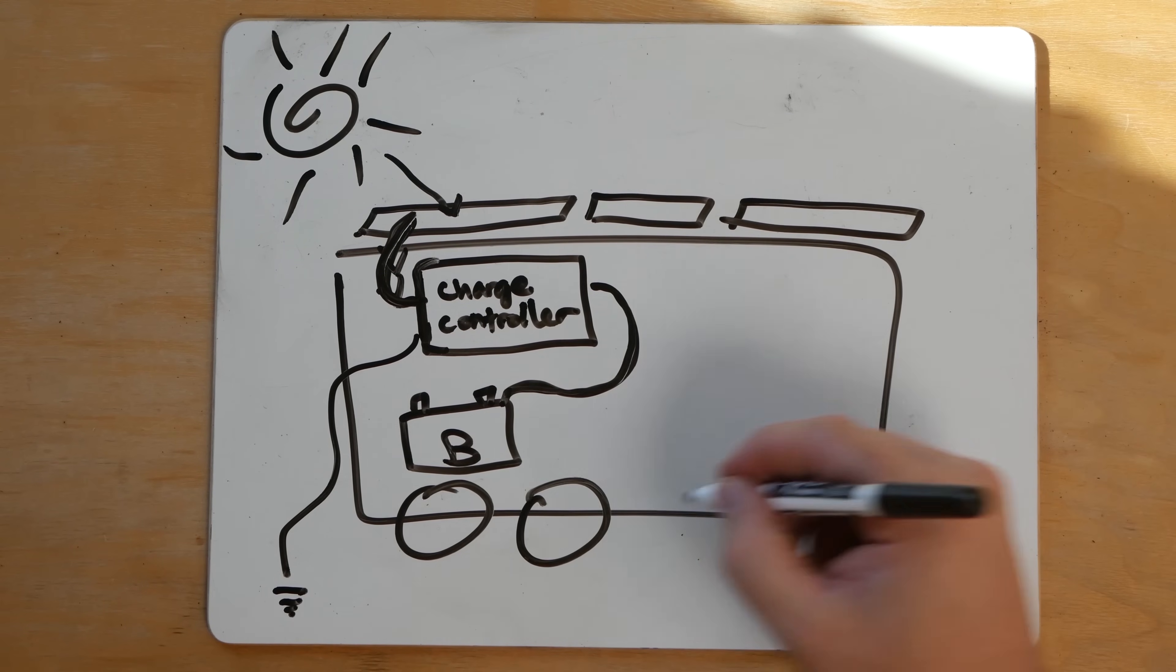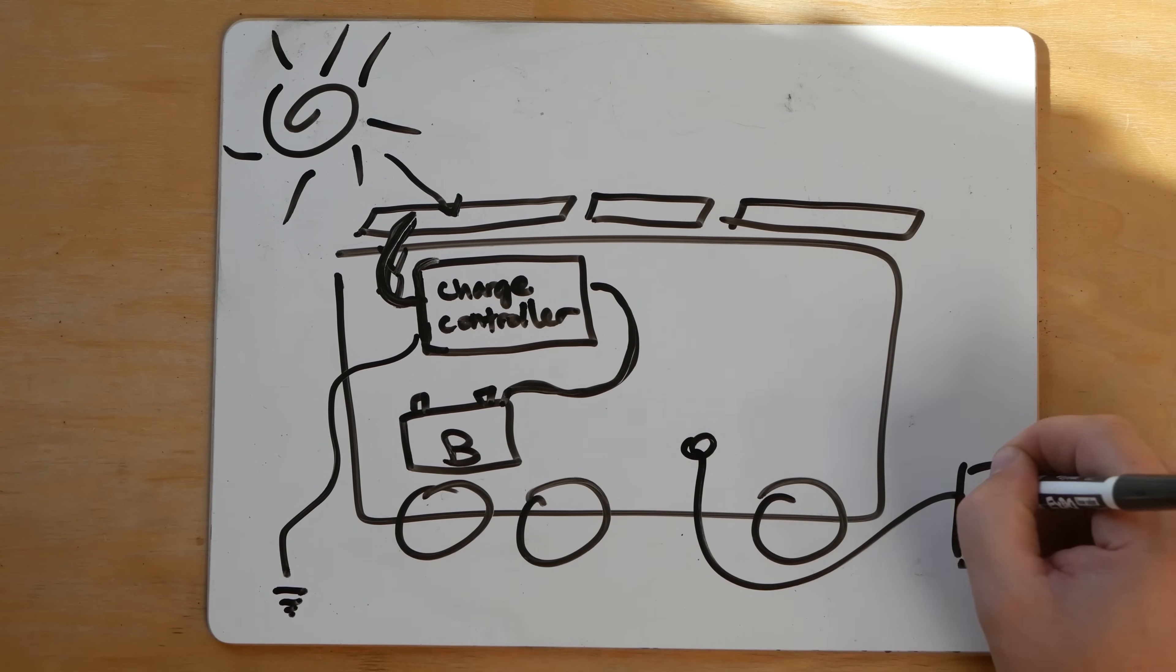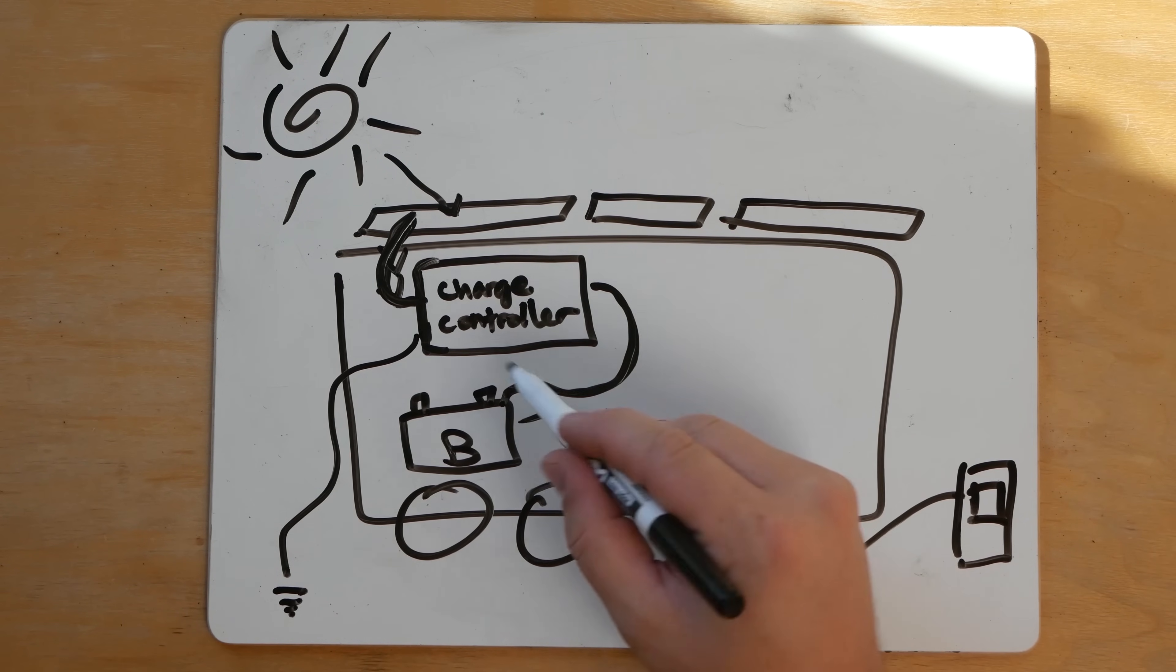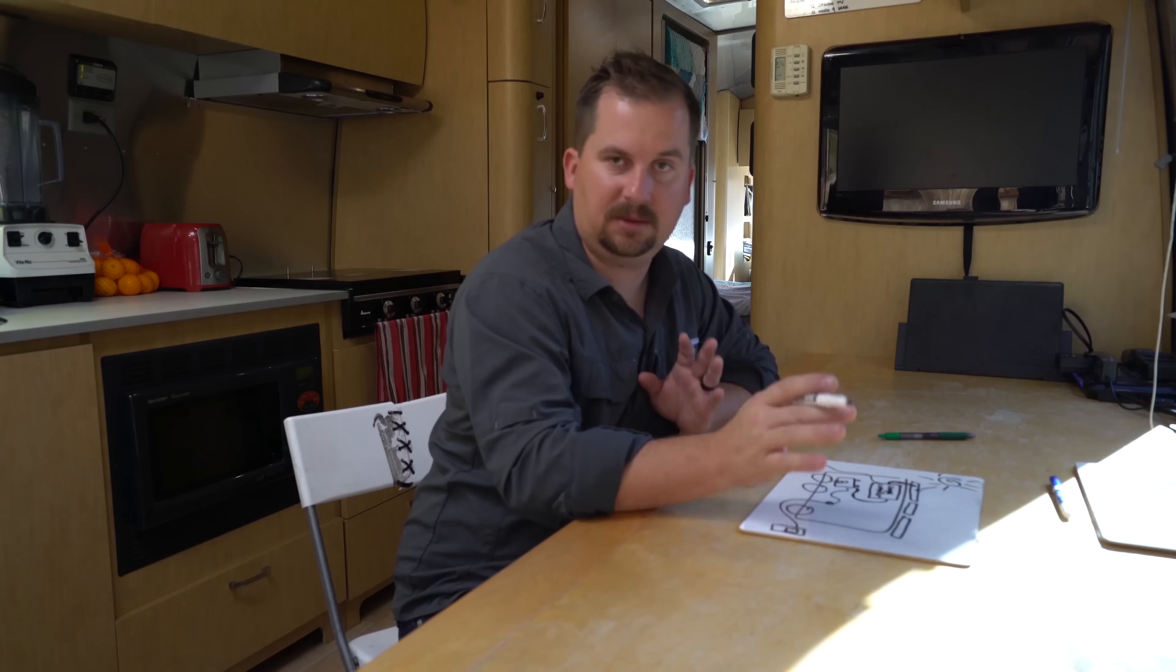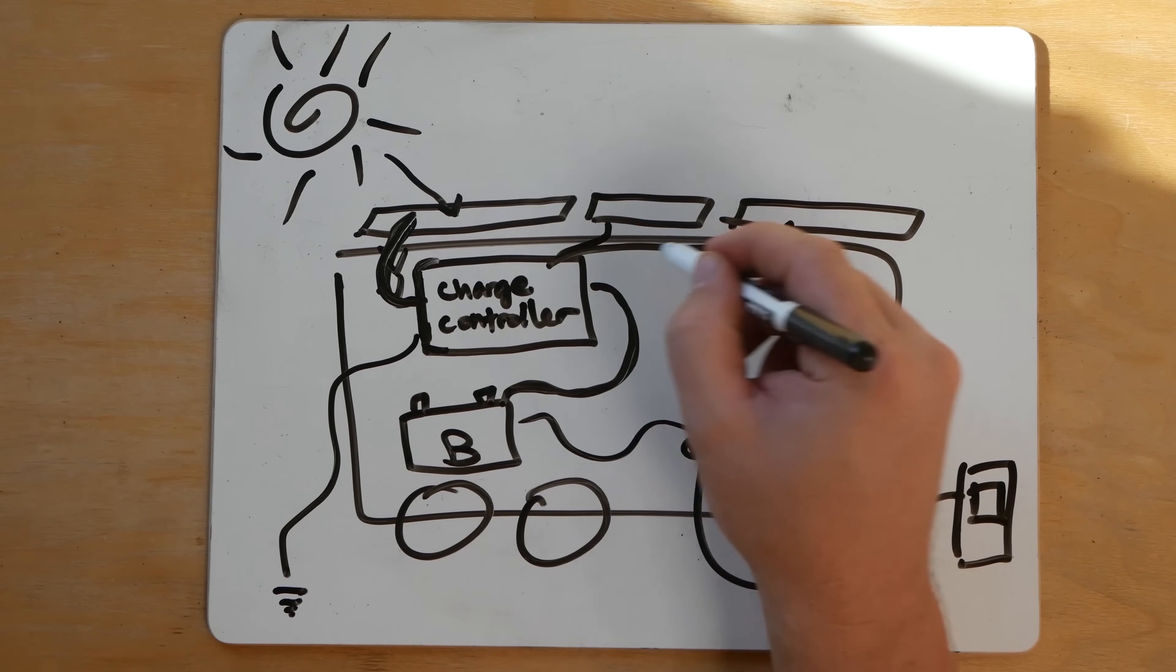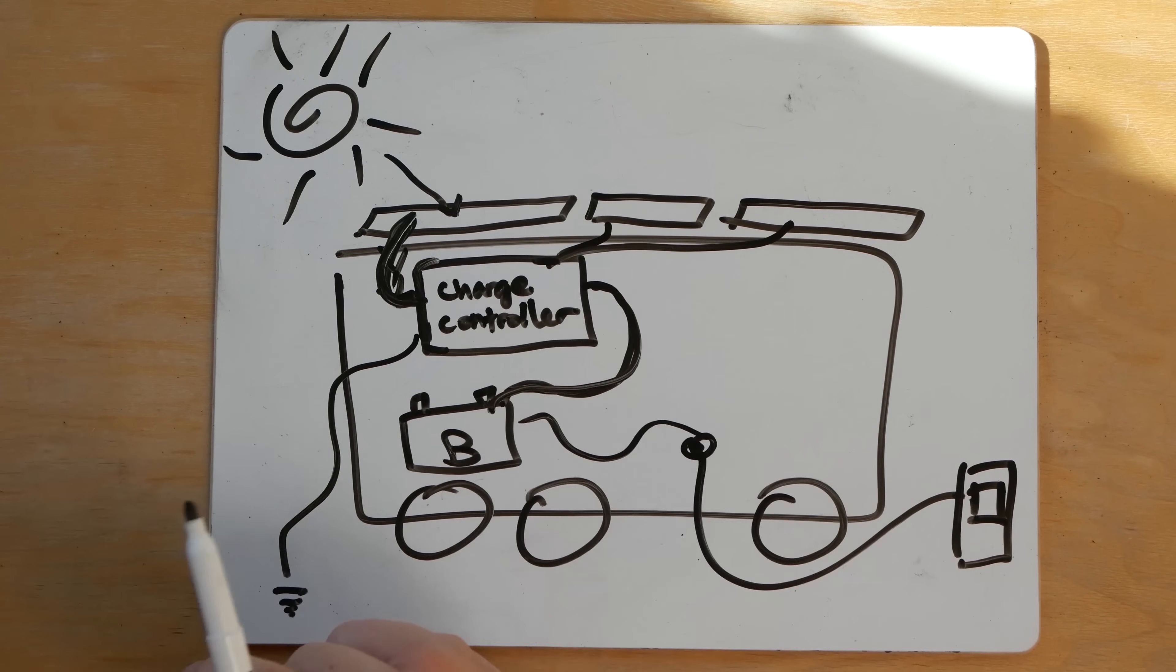And the charge controller only controls how your battery is charged with solar. If you hook up to a pedestal at your RV park, that will charge your battery but not through the charge controller. A little bit confusing but there are different systems there. All of these panels feed to a charge controller. It takes all that energy and decides how best to use it to charge your battery.